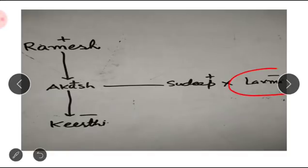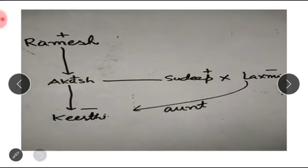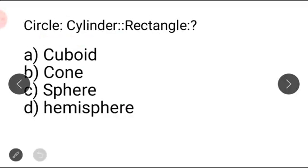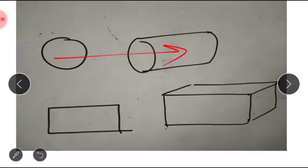So what is the relationship between Lakshmi and Kirti? Aakash is Kirti's father and Sudeep is Kirti's uncle. Therefore Lakshmi, being Sudeep's wife, is Kirti's aunt. So Lakshmi is Kirti's aunt.